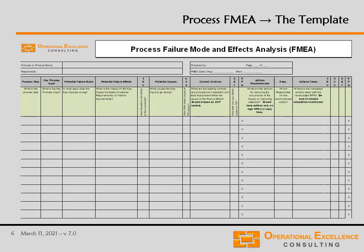Here you see the process failure mode and effects analysis template that is included in the Excel file that comes with this eLearning module. Many organizations are actually using the process FMEA template as a control document. So therefore you see the header, which states what process we are analyzing, who is the responsible person or owner of this process FMEA, who prepared it, and also a documentation number, origination date, and last revision date.